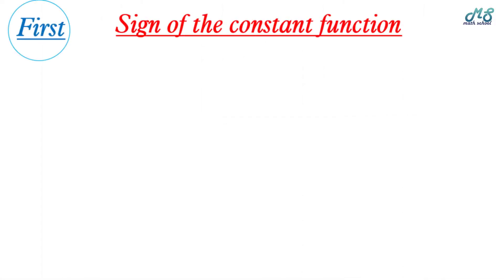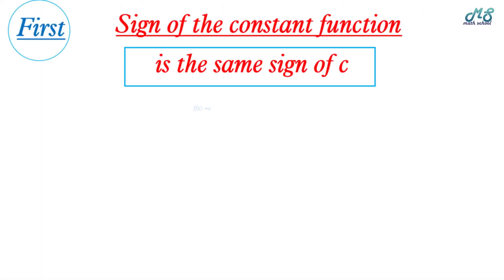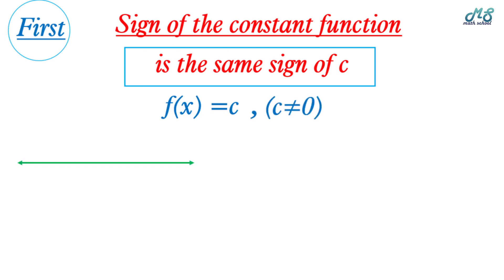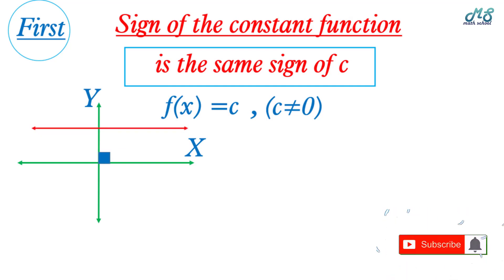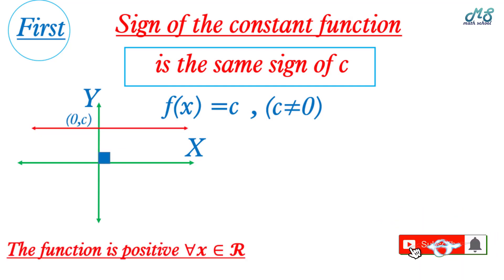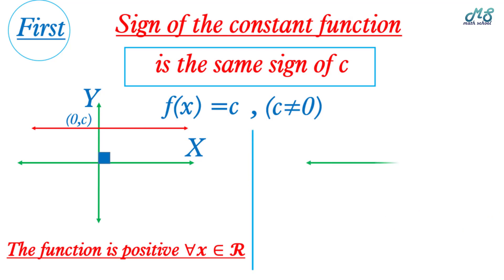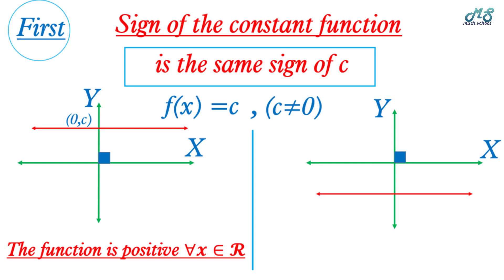First, the sign of the constant function: f(x) equals c. It's represented by a line parallel to the x-axis. If c is positive, the line is above the x-axis and the function is positive for all x ∈ ℝ. But if c is negative, the line is below the x-axis and the function is negative for all x ∈ ℝ.